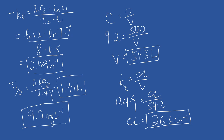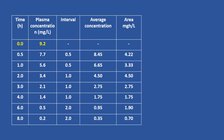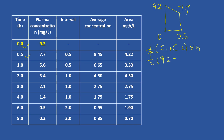To apply the trapezoidal rule more easily, generate a table. Using time points 0 and 0.5 as an example: concentrations are 9.2 and 7.7. The equation is: half times (C1 plus C2) multiplied by the height. Plugging in: half times (9.2 plus 7.7) times 0.5 gives 4.22. Do this for all intervals and sum all the areas; you should get 19.15.